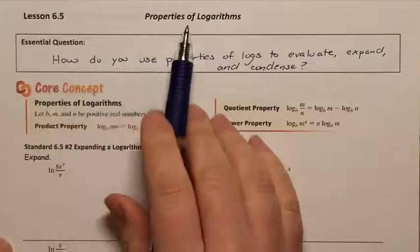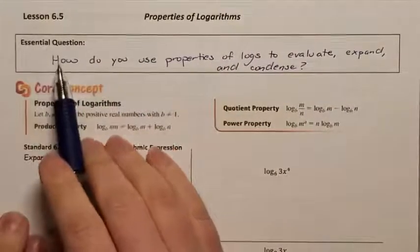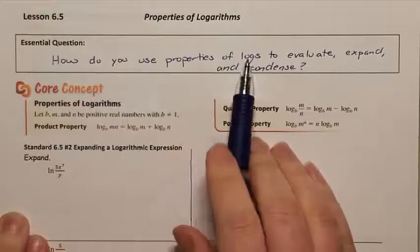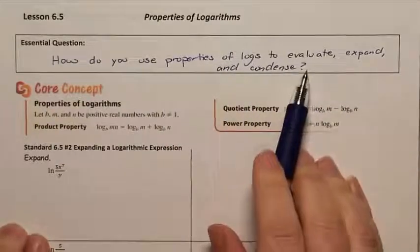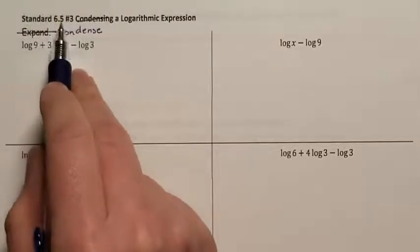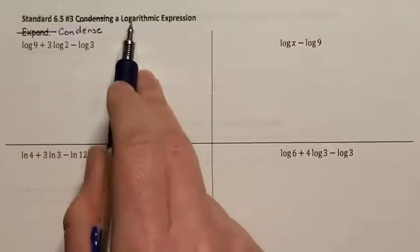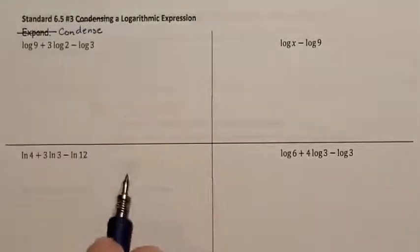Lesson 6.5, properties of logarithms. Our essential question: how do you use properties of logs to evaluate, expand, and condense? Standard 6.5, number 3, condensing a logarithmic expression. We're being asked to condense these problems. We have four we're going to do together, and the rest are for you for independent practice.